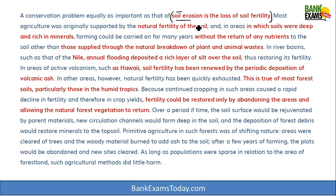Other than the natural breakdown of plants, animals, and animal waste supplying nutrients to the soil, farmers were not doing anything extra. In river basins such as that of the Nile, annual flooding deposited a rich layer of silt over the soil, restoring its fertility. So areas near the Nile are fertile because each year floods deposit a layer of silt over the soil.